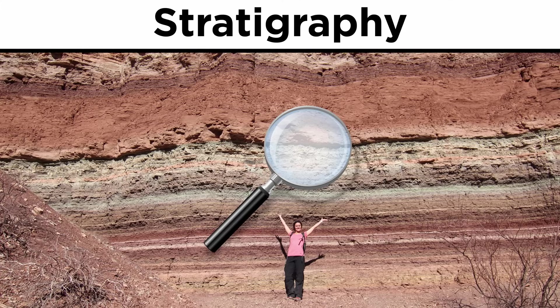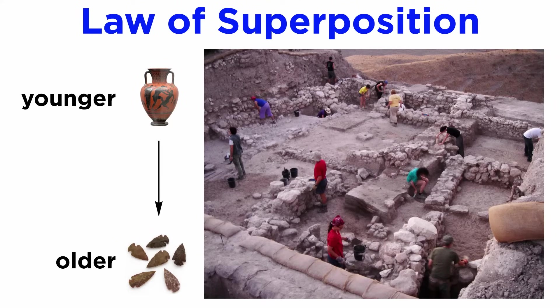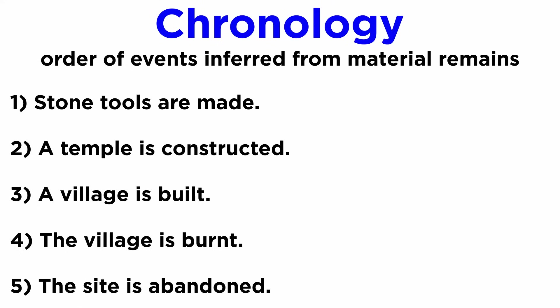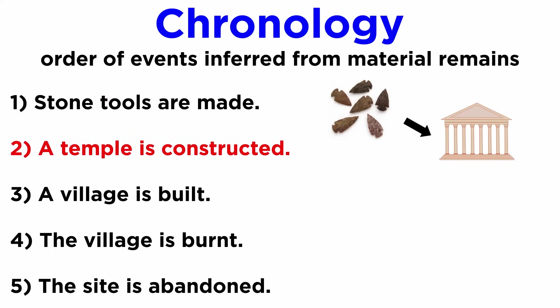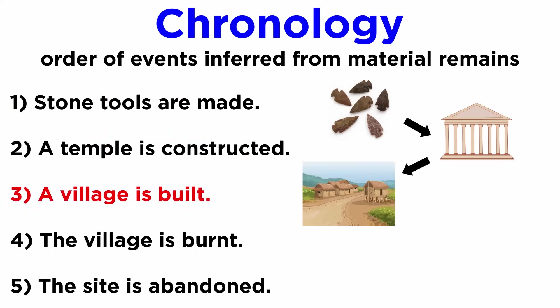This is important for a few reasons. First, if we find a stone tool in a layer below a piece of pottery, we know by the law of superposition that the stone tool is older than the pottery. Think back to that chronology of our hypothetical site. Once again, it went like this: stone tools are made, a temple is constructed, a village is built, the village is burnt.